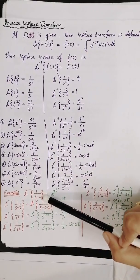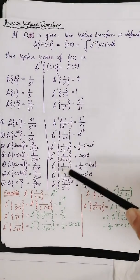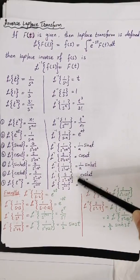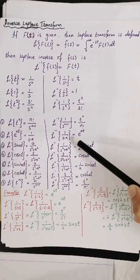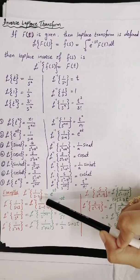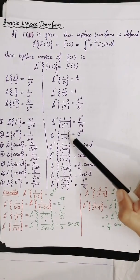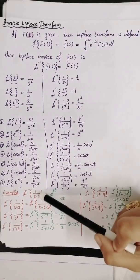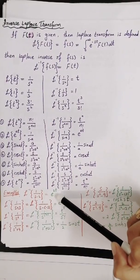Now, find the Laplace inverse of 1 over (s minus 2). Looking at our formula, 1 over (s minus a) matches here, where the value of a is 2. Since Laplace inverse of 1 over (s minus a) equals e^(at), we get: Laplace inverse of 1 over (s minus 2) equals e^(2t).